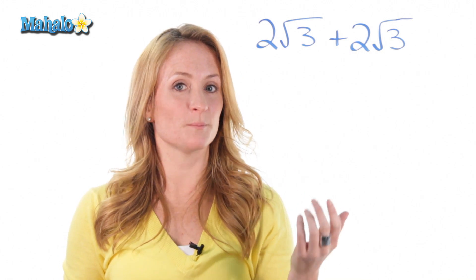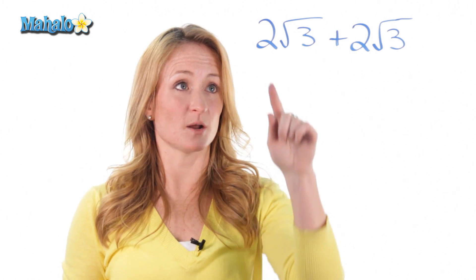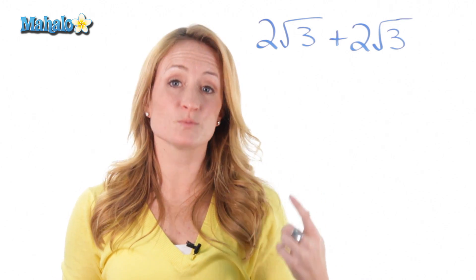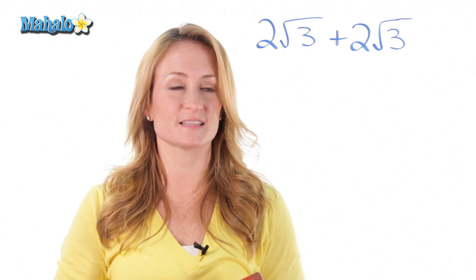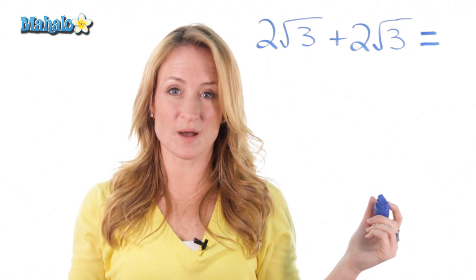If they do, you can go ahead and combine them. Some people get confused because they think they're supposed to add the numbers outside the radical as well as the numbers inside, but that's not the case. So let's do this problem. They have the exact same number inside the root, so we can combine them.